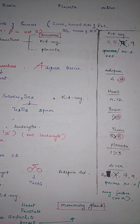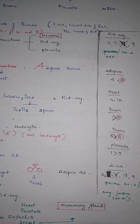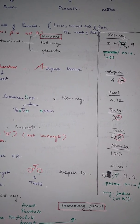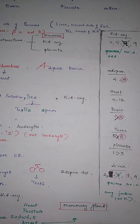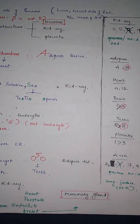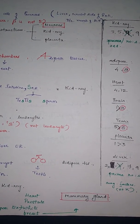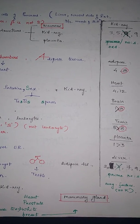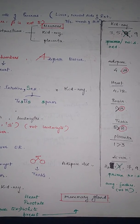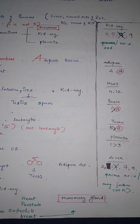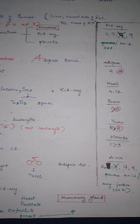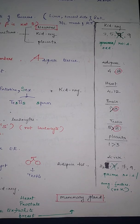Heart, we have 4 and 12. Brain, we have 1 and 8. Testis, we have 5 and 8. Placenta, we have 1 and 3.